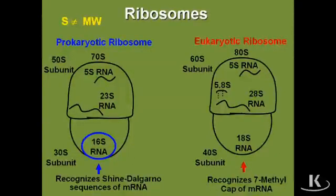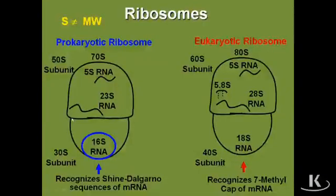The 16S ribosomal RNA will complementarily base pair with the Shine-Dalgarno sequence. Remember where that is — it's in the 5' untranslated region of each and every prokaryotic messenger RNA. The binding of those two together helps get the mRNA in the proper location of the ribosome so that translation can be initiated.